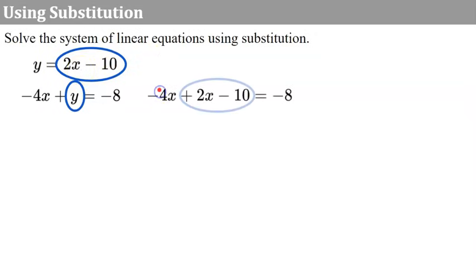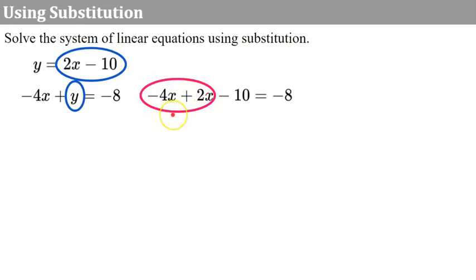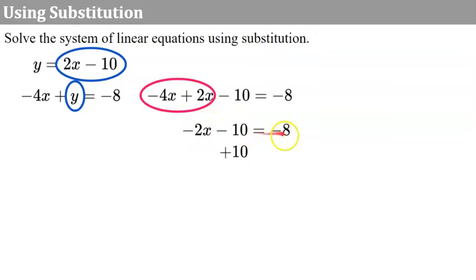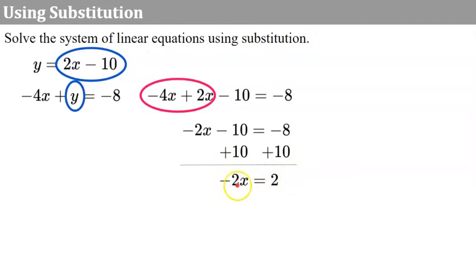Here we go: negative 4x, and now instead of adding y, we've replaced y with 2x subtract 10. Now we're going to combine like terms to solve for x. Negative 4x and 2x are negative 10x, subtract 10 equals negative 8. To solve for x, we're going to add 10 to each side to isolate the variable term, so negative 2x equals positive 2. Then we divide both sides by negative 2, giving us x equals negative 1.